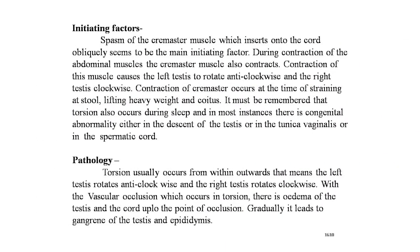The main initiating factor is spasm of the cremasteric muscles, which insert onto the cord obliquely. During contraction of the abdominal muscles, the cremasteric muscles also contract. This causes the left testis to rotate anti-clockwise and the right testis clockwise. Cremasteric contraction occurs during straining at stool, lifting heavy weights, and coitus.